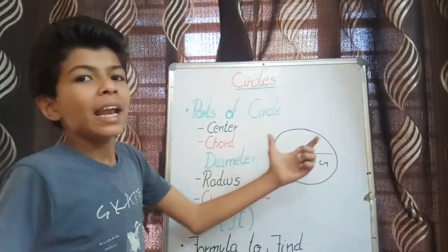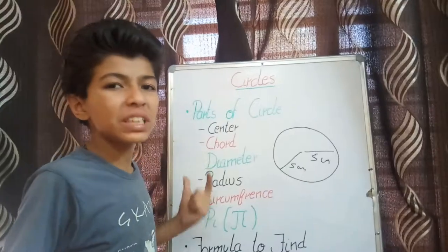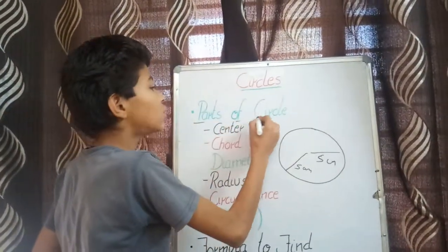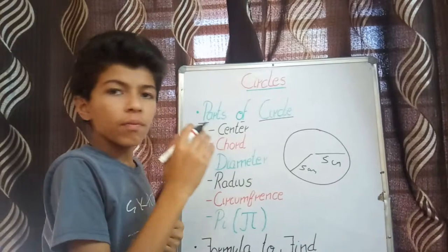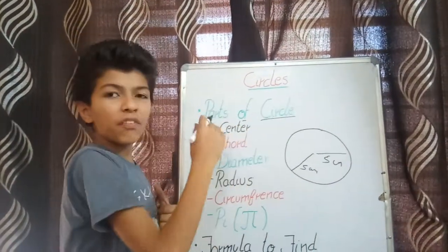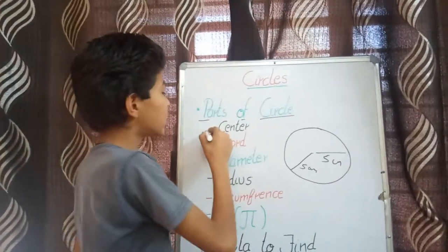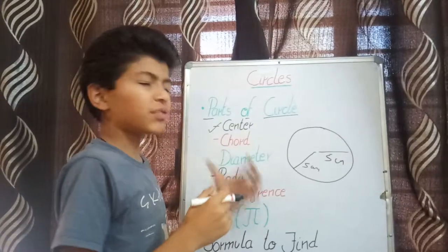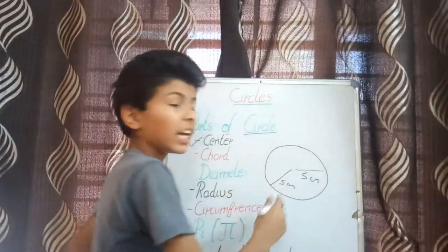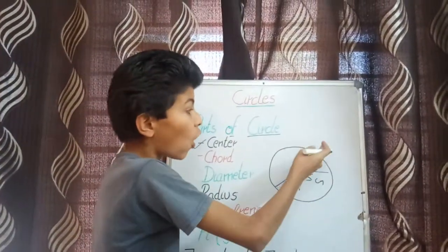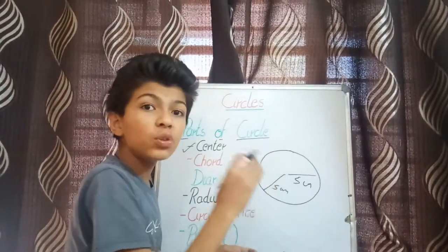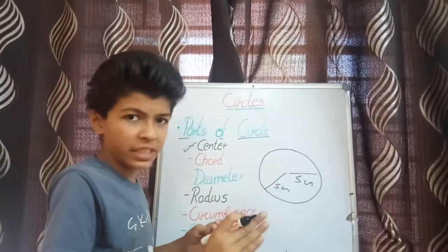So friends, let's move to the first topic: the parts of a circle. What is the center? A center is a point from which all the points of the circle lie at an equal distance.